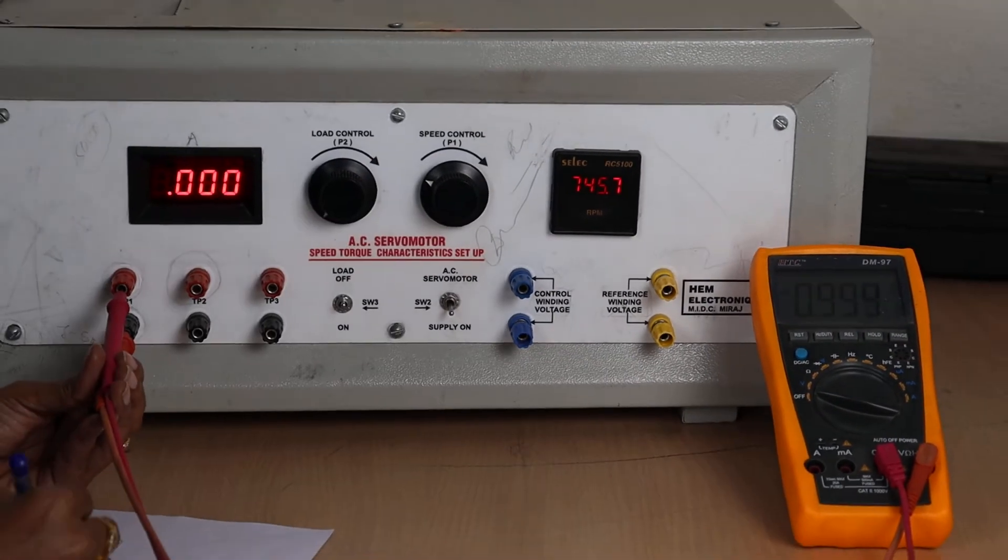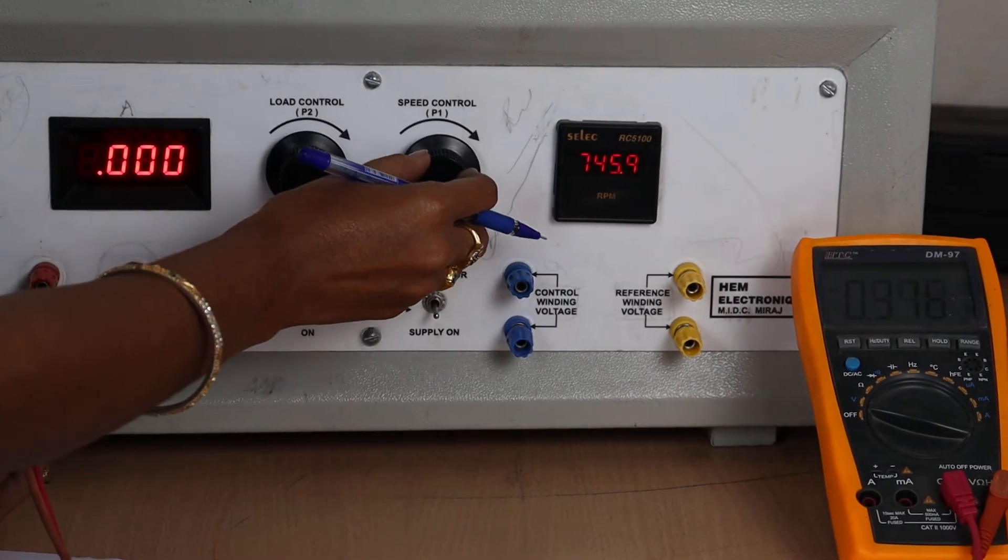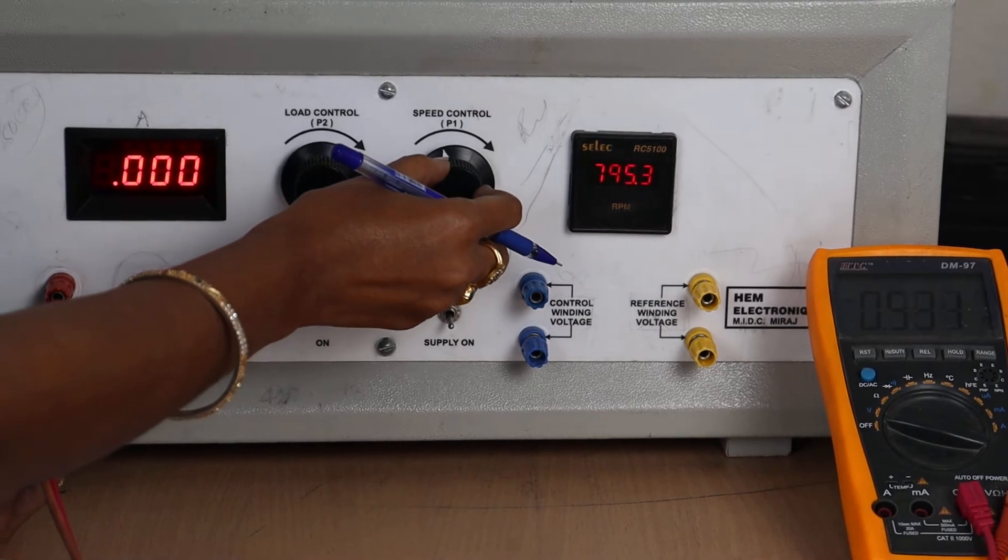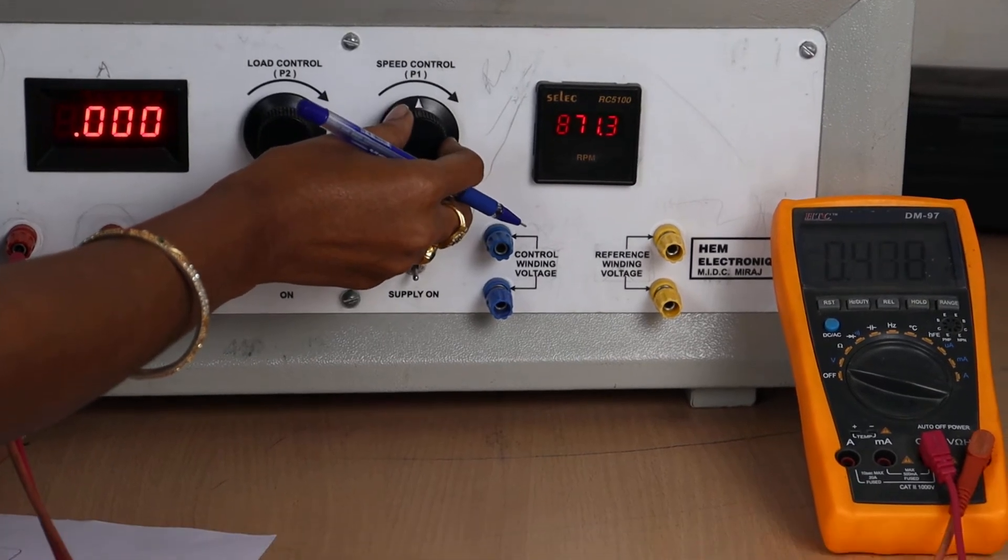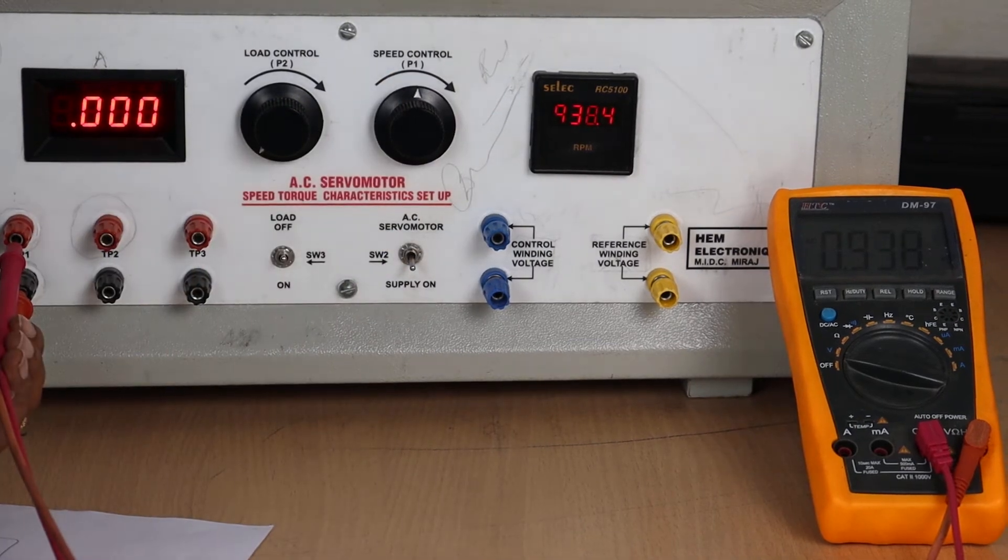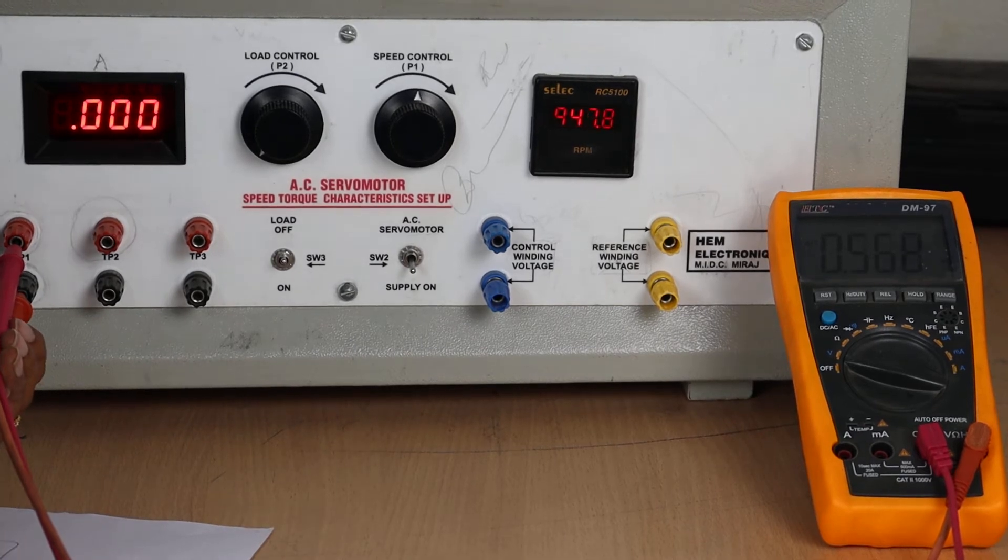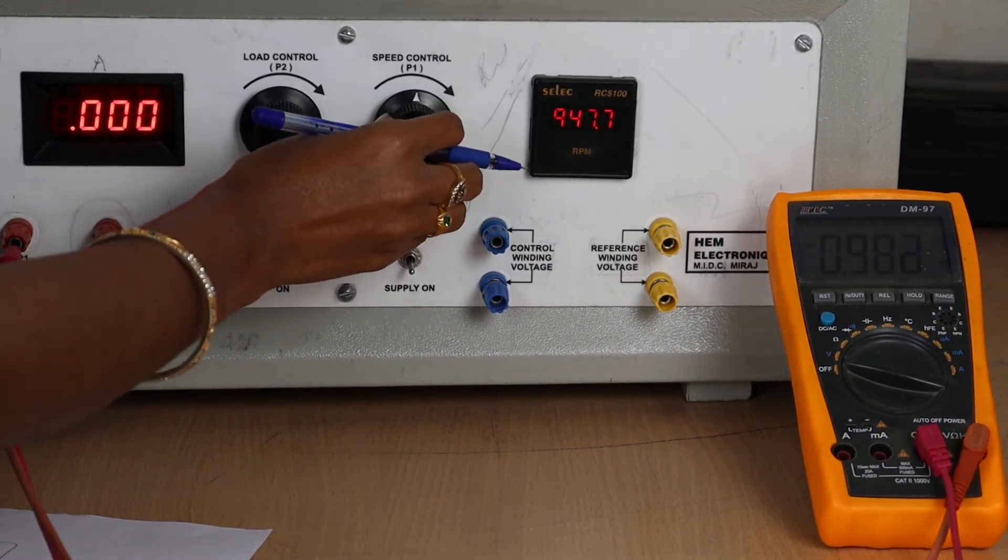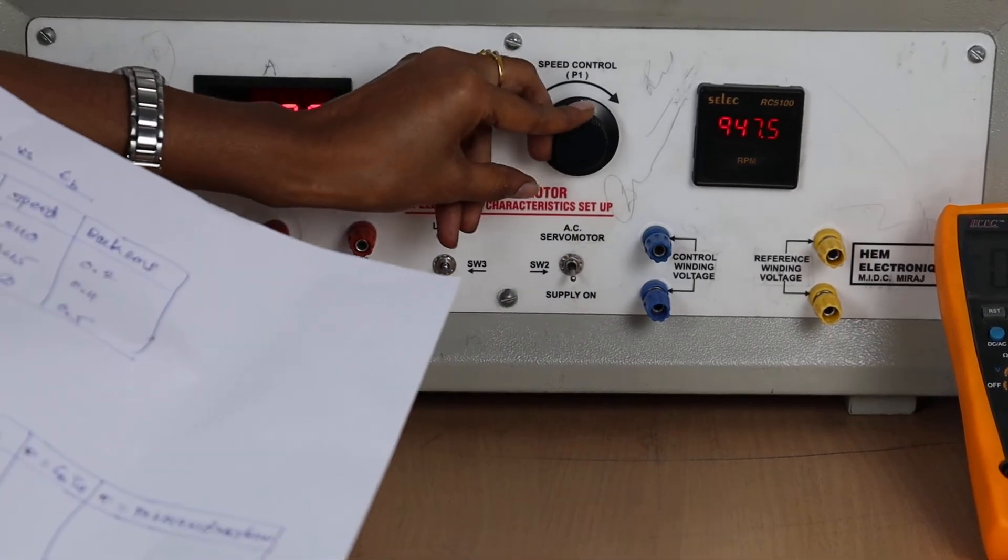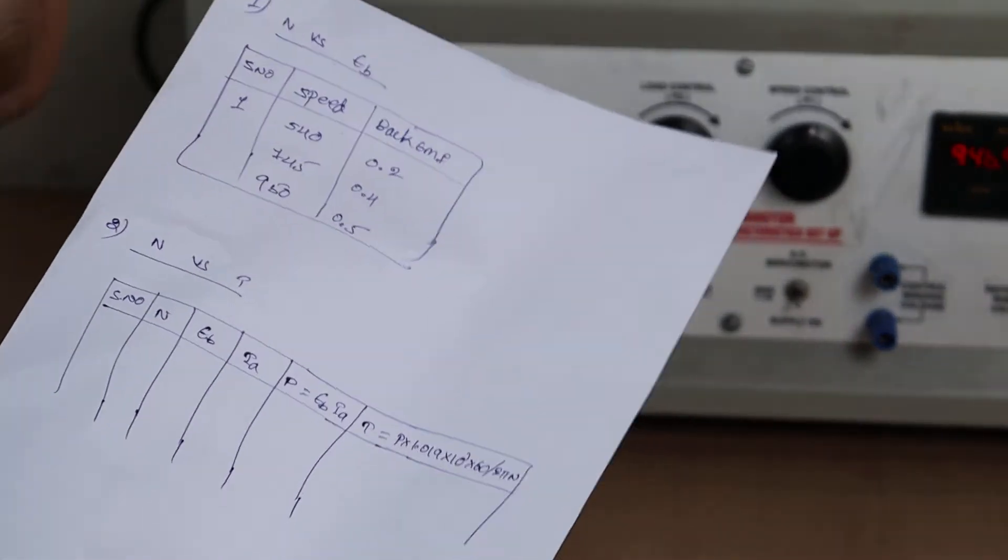The voltage is 0.4. Again I am increasing the speed by using P1. 950, voltage is 0.5. So like this by varying the speed control you have to note down the values of speed as well as back EMF.